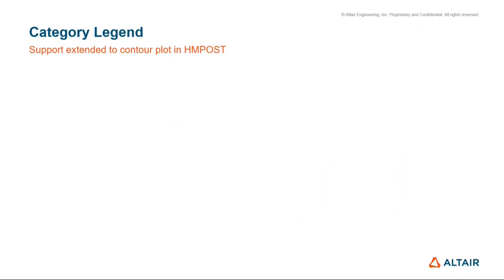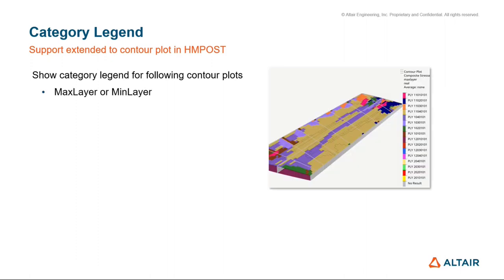Another important update: in the previous release we focused on adding the legend as an entity in HyperMesh — the numeric legend for contour, vector, and tensor. We are now extending support to the category legend for the contour plot. One heavily requested type is the max layer and min layer — previously we only showed the ID of the plies, and now this is converted to ply IDs or layer IDs, either ply or Z1/Z2 for standard shell layers.